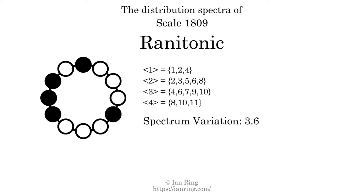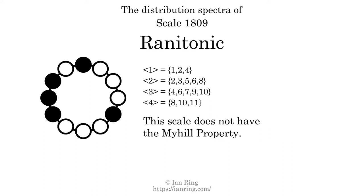Since the variation is greater than 0, this indicates that the scale is not perfectly even. The highest spectrum width is 6. Since this is greater than 1, we know that this scale is not maximally even. If every spectrum has exactly 2 specific intervals, we call that the Myhill property. This scale does not have the Myhill property. Since the generic interval ranges overlap, this scale is an improper scale.